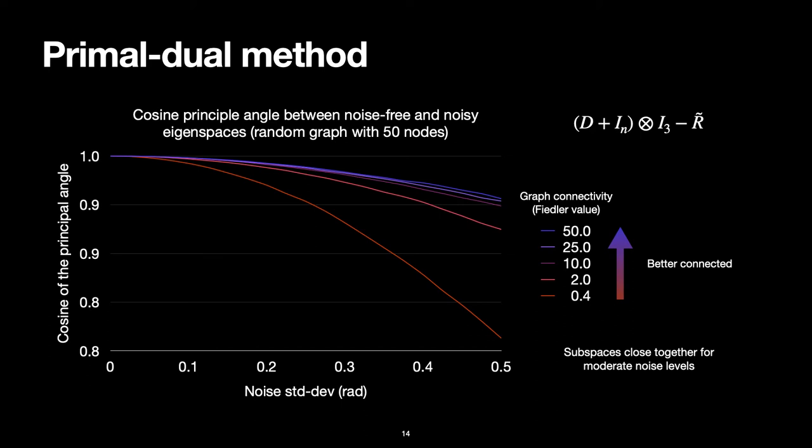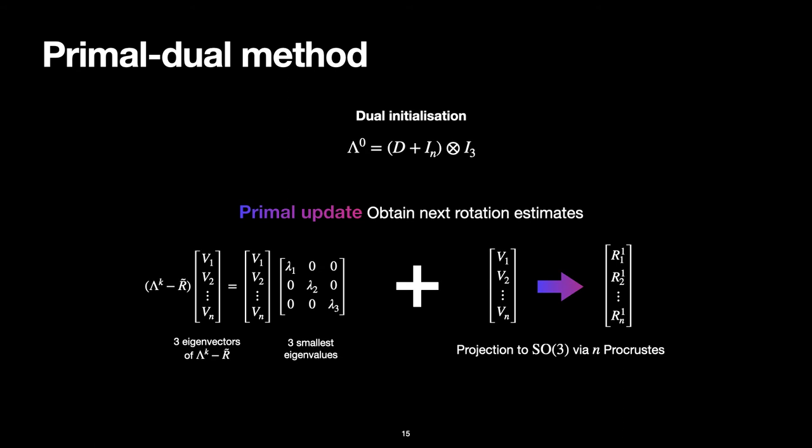As expected, as noise level increases, the cosine of the principal angle decreases, and as connectivity increases, they become more robust to noise. The key takeaway is that for most noise levels, the cosine of the principal angle is on average very close to 1. This λ appears to be a good approximation of the optimal λ even for noisy measurements. Thus, we will use it as our dual initialization, represented as λ₀.